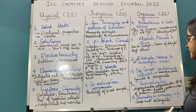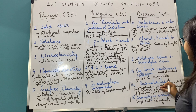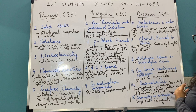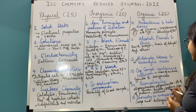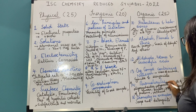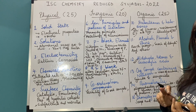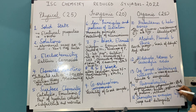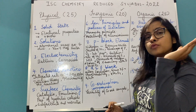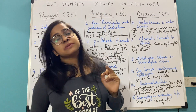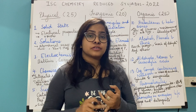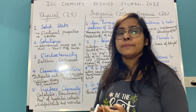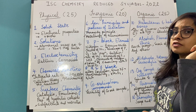Coming to Biomolecules, the 14th lesson: oligosaccharides, polysaccharides, structure of glucose, structure of fructose, and structure of proteins have been reduced. Classification of proteins has been reduced and vitamins have been reduced. Denaturation is still there. So structure of proteins is reduced, and vitamins are no longer required.